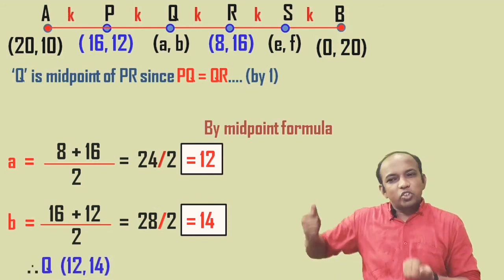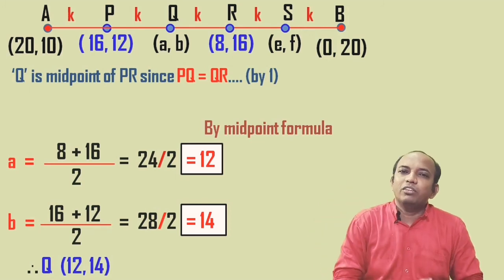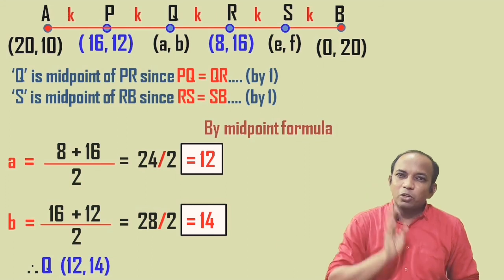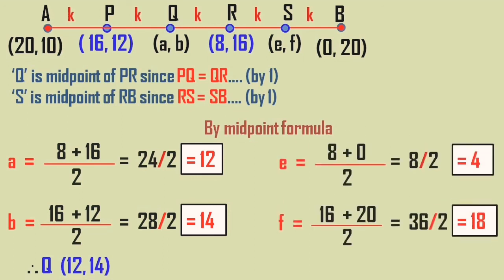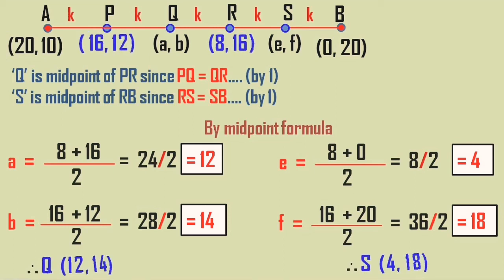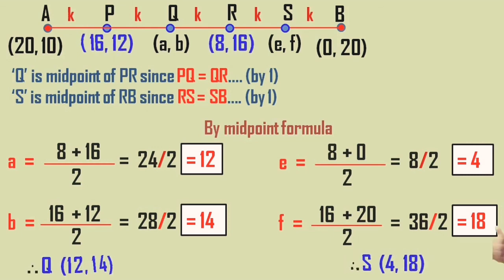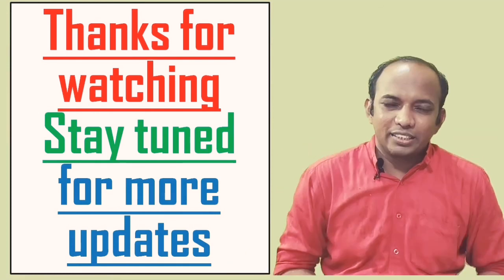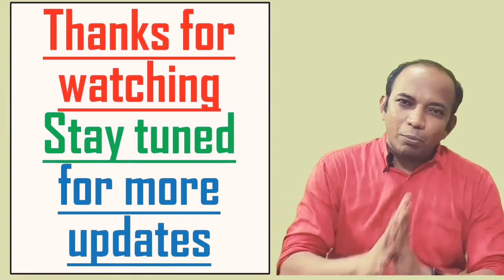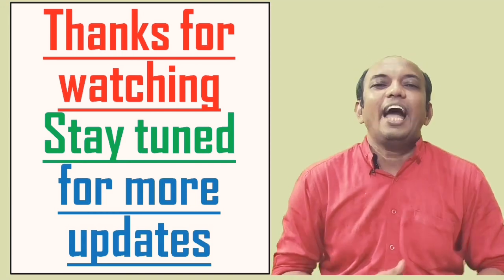S is the midpoint of RB. Using coordinates of R = (8, 16) and B = (0, 20): e = (8 + 0) / 2 = 4, f = (16 + 20) / 2 = 18. So S = (4, 18). Therefore all coordinates dividing AB into five equal parts are P = (16, 12), Q = (12, 14), R = (8, 16), and S = (4, 18). Do not forget to write the final answer. We have completed Exercise 5.2. If you have any doubts, please mention them in the comment section below.